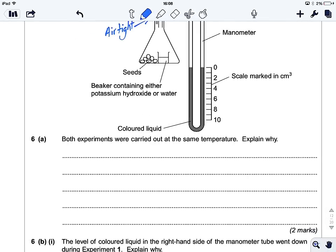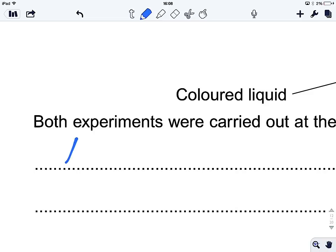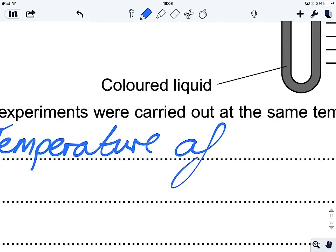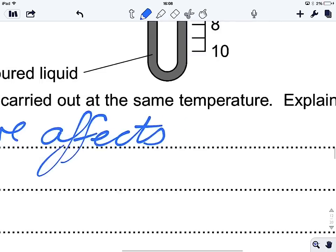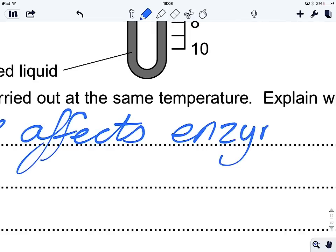So when we see temperature, we should immediately be thinking kinetic energy. So what's affected by kinetic energy and temperature? Well, enzymes, surely. And what are we measuring? Well, we're measuring respiration rate, or gas exchange, which is needed for respiration. So surely, the answer must be something to do with enzymes and respiration. So the answer that I'm going for is going to be temperature affects enzymes which are required for respiration.